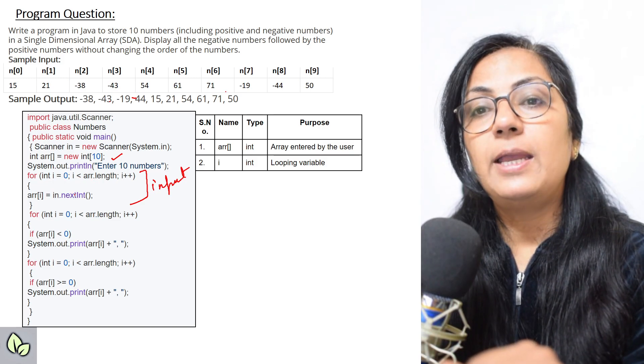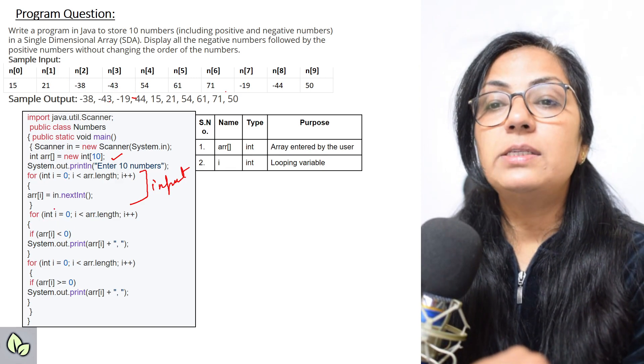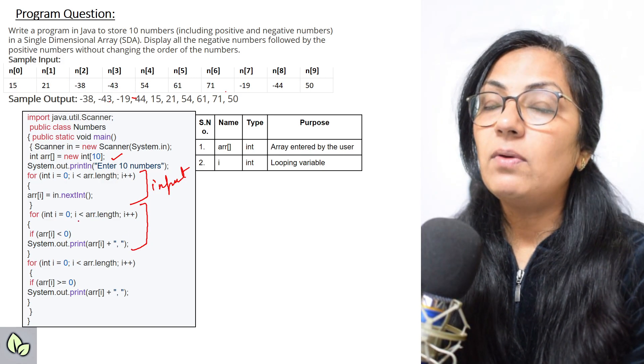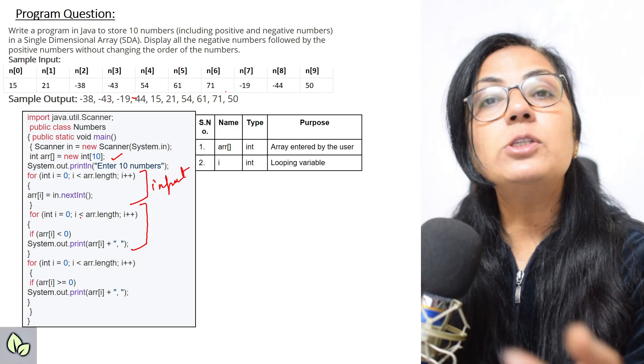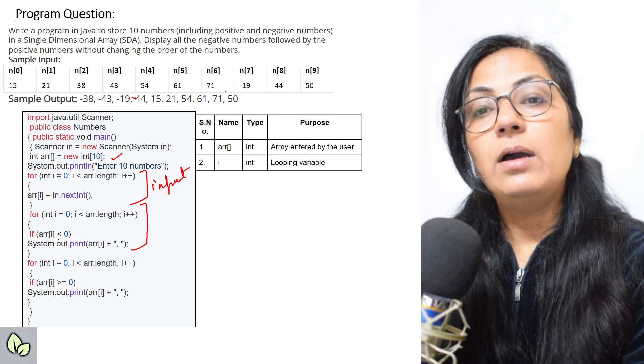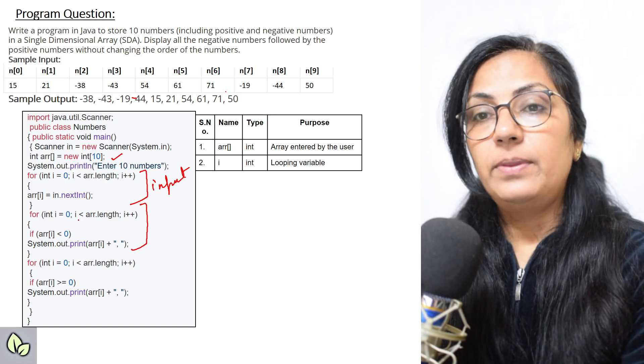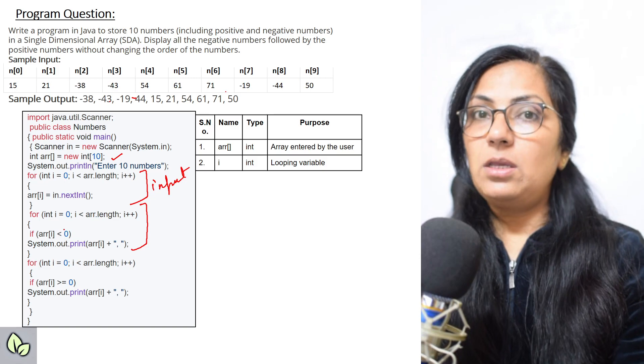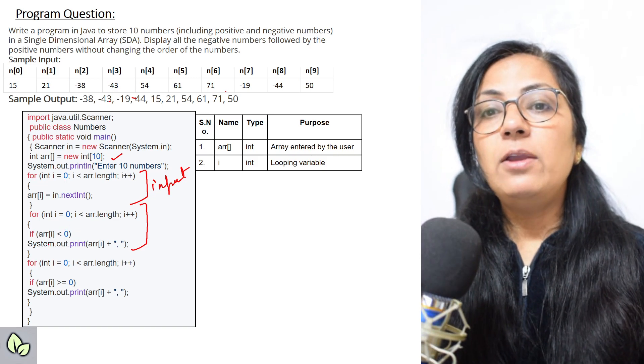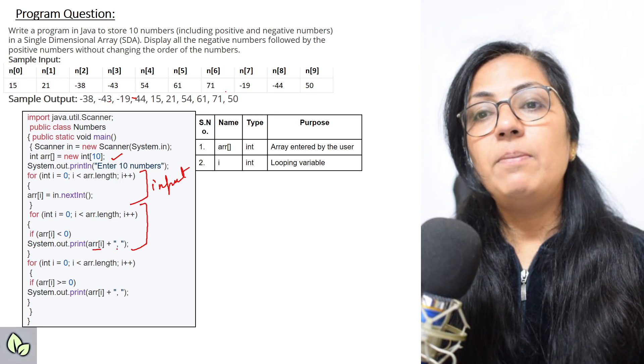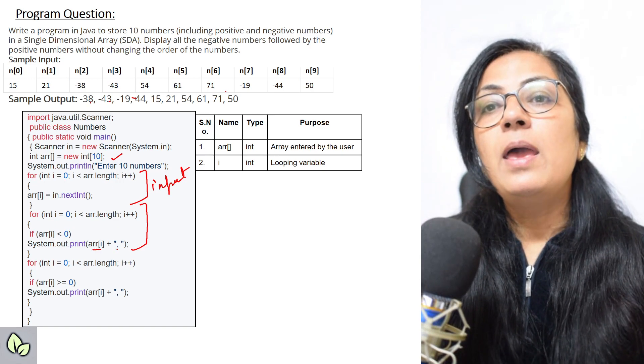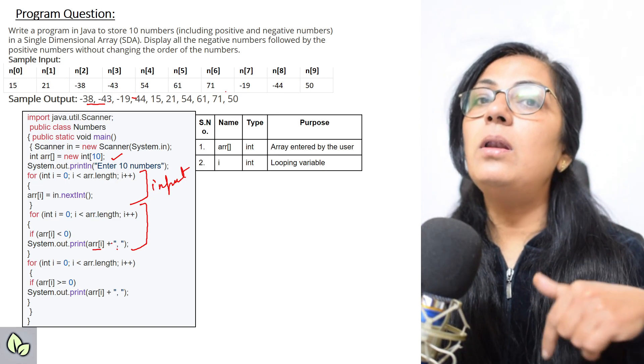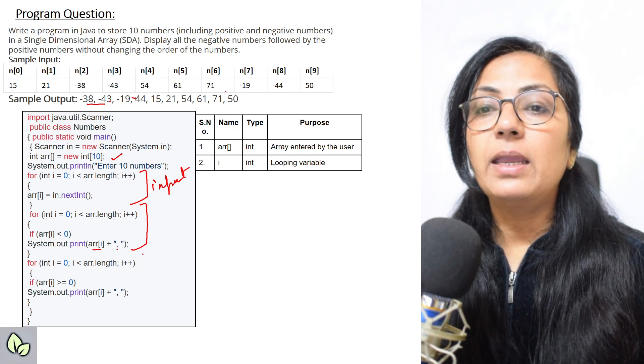Now again we will take the loop for displaying of negative numbers. Maybe the first index number value contains the negative number or the last index number, we don't know in which order the user has entered. So here we have to take the loop from 0 till the last element. So if it is less than 0, less than 0 means negative. 0 is the boundary, less than 0 is negative number. So if it is less than 0, you print that element. And within double quotes we have given comma as per given in the sample output of the question.